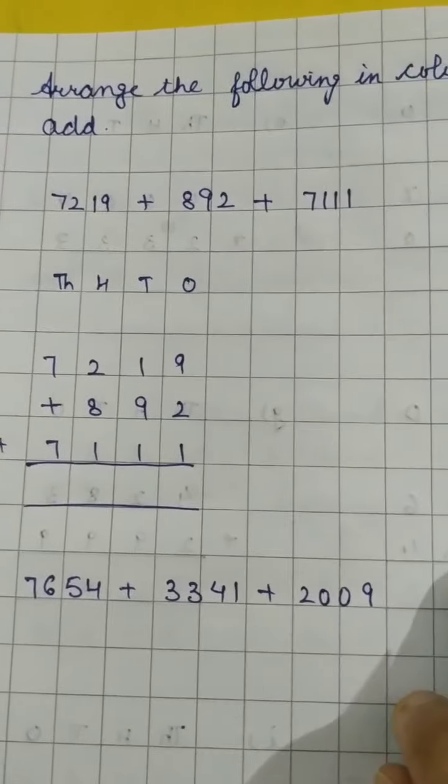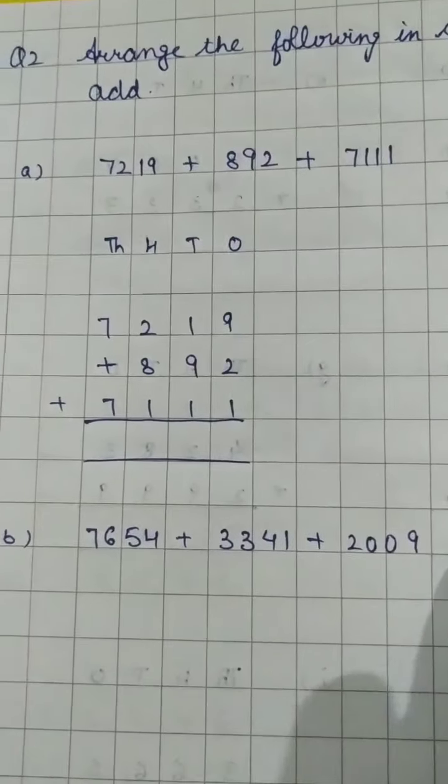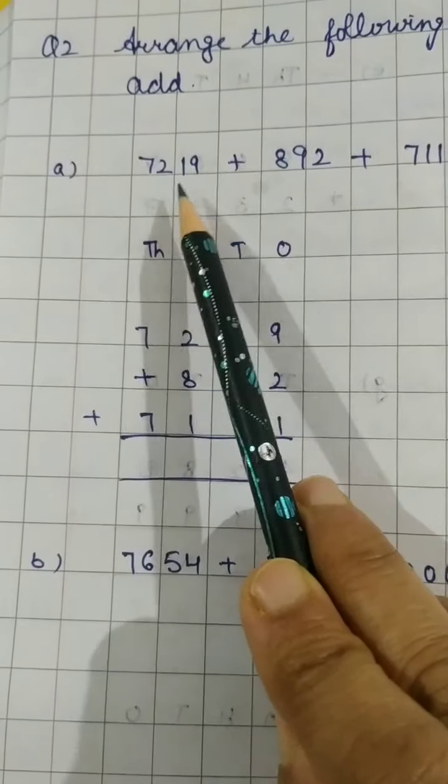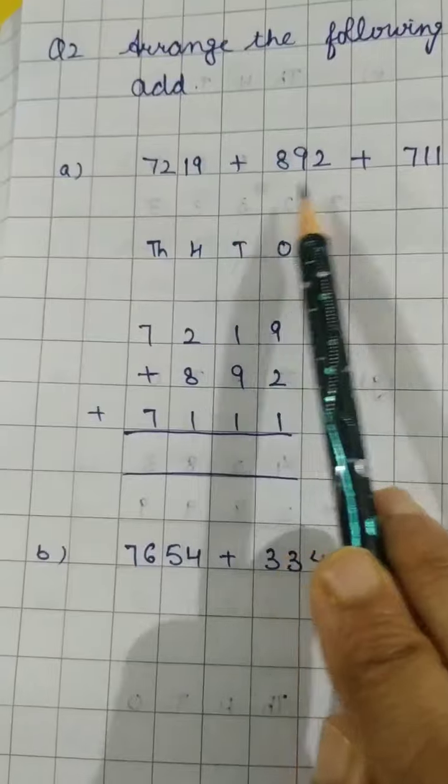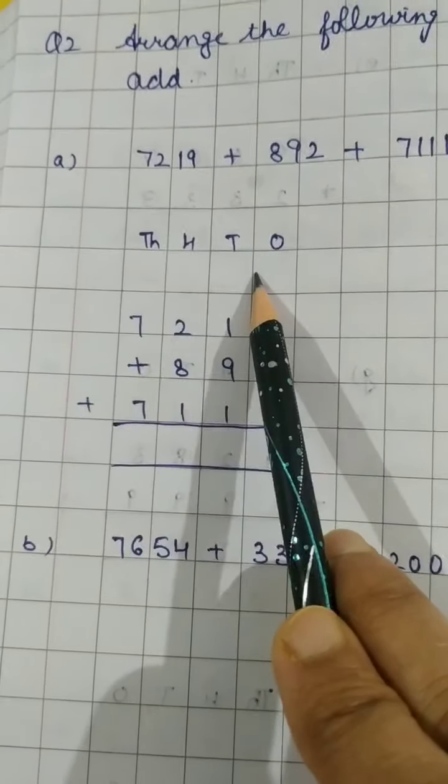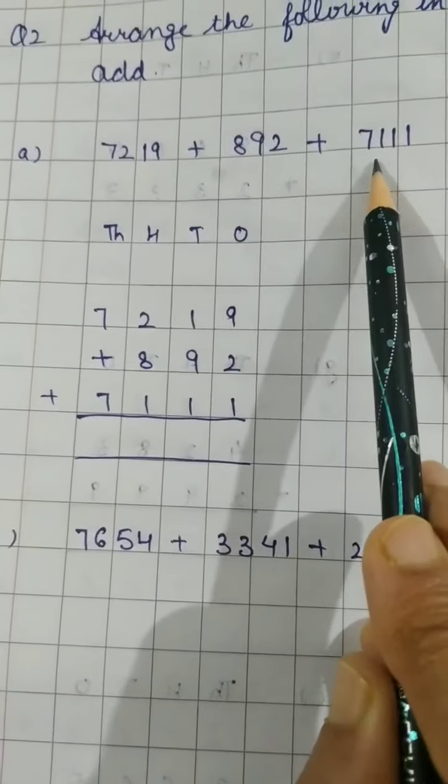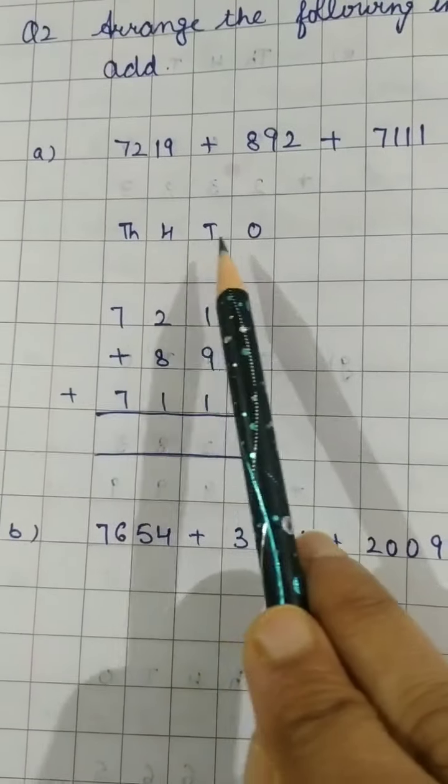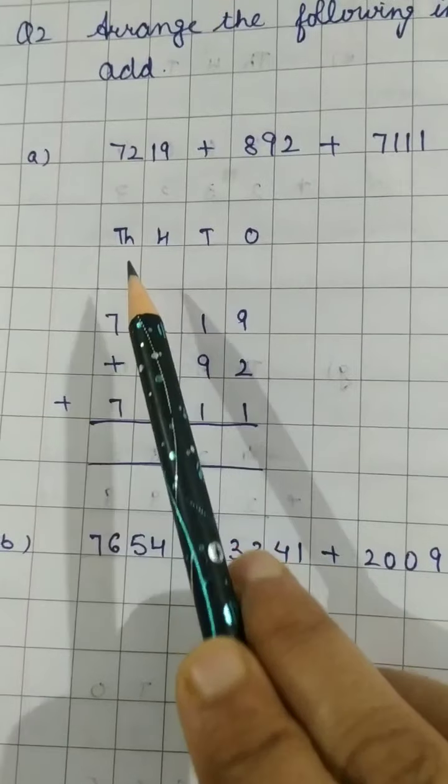Question number 2 is arrange the following in columns and add. This kind of problems can also come where you will be given with the quantities which will be in a row. You have to arrange them in columns and add. This is the way you have to arrange them. See 3 quantities are there: 7219, 892, 7111. Now write ones, tens, hundred, thousand and according to the places you have to arrange.